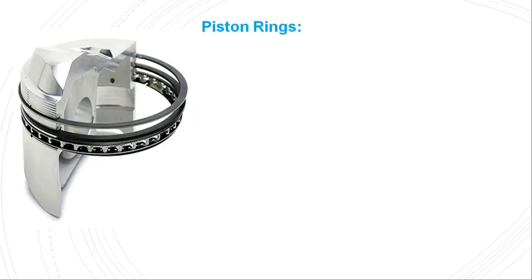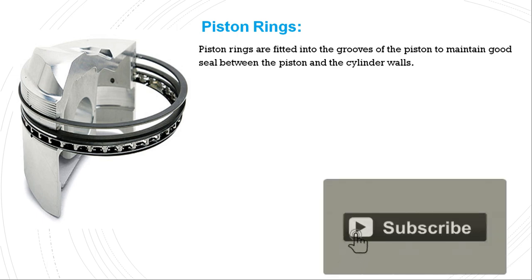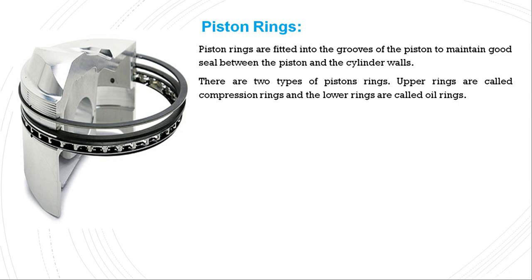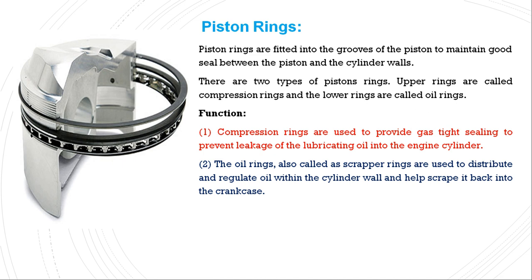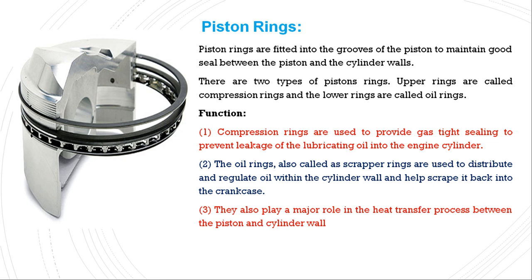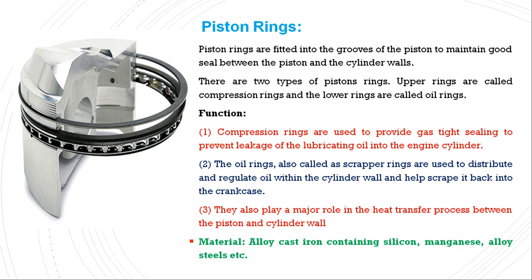There are basically three functions of the piston ring. Piston rings are fitted into the grooves of the piston to maintain a good seal between the piston and cylinder walls. There are two types: upper rings called compression rings and lower rings called oil rings. First function: to increase the compression ratio and provide gas-tight sealing to prevent leakage of lubricating oil into the engine cylinder. Second function: oil rings, also called scraper rings, distribute and regulate oil within the cylinder wall and scrape it back into the crankcase. Third function: piston rings play a major role in heat transfer between the piston and cylinder wall. The material used for piston rings is alloy cast iron containing silicon and manganese alloy steels.